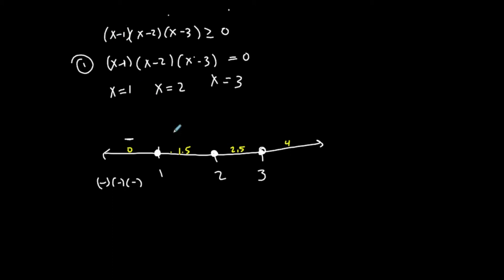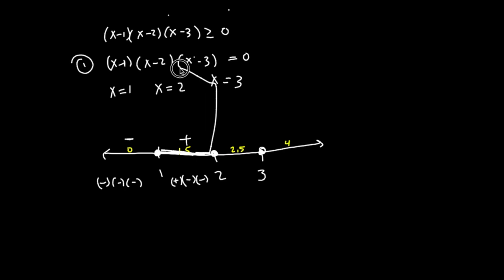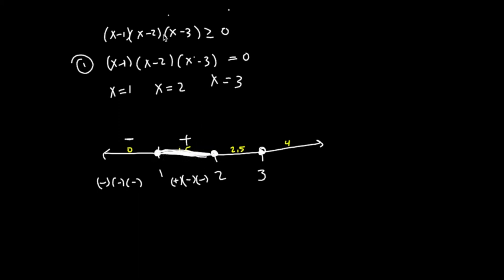Let's try 1.5. (1.5−1) is positive, (1.5−2) is negative, and (1.5−3) is negative. Positive times negative times negative gives a positive total outcome. That means everything between 1 and 2 is part of my solution set, because the left-hand side is greater than 0.